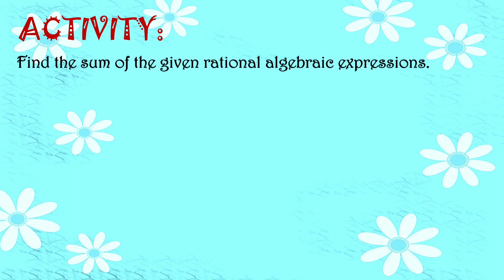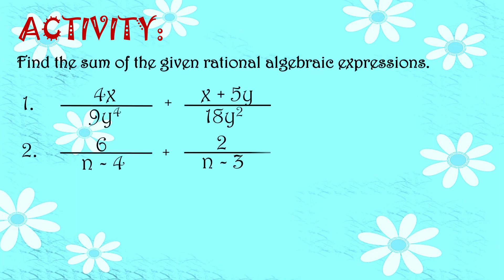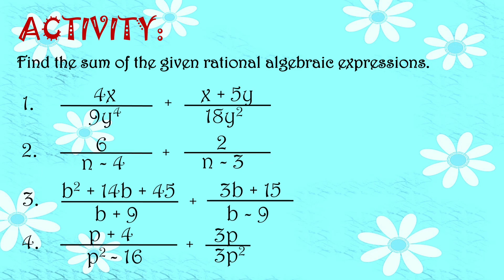So kayo naman, try nyo ito. Find the sum of the given rational algebraic expressions. So magkakaiba sila ng denominator. So una-una nyo gagawin, dapat gawin nyo muna silang similar RAE. And then kapag naging similar na sila, pwede na kayong mag-add. Pwede kayo gumamit ng LCD, pwede rin gumamit ng butterfly method. Saan kayo mas nadadalian, meron kayong choice.